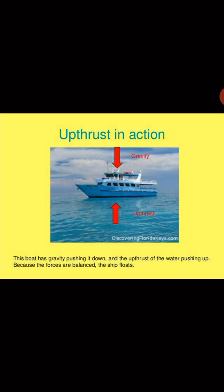Up thrust is an upward force exerted by a fluid, and it opposes the weight of an object. It acts opposite to gravity — gravity pulls all objects downwards, so up thrust is always in the upward direction. In this image of a ship, the force of gravity acts downwards on the ship. Up thrust acts in the opposite direction — upwards. Both forces get balanced, and because the forces are balanced, the ship can float on water.